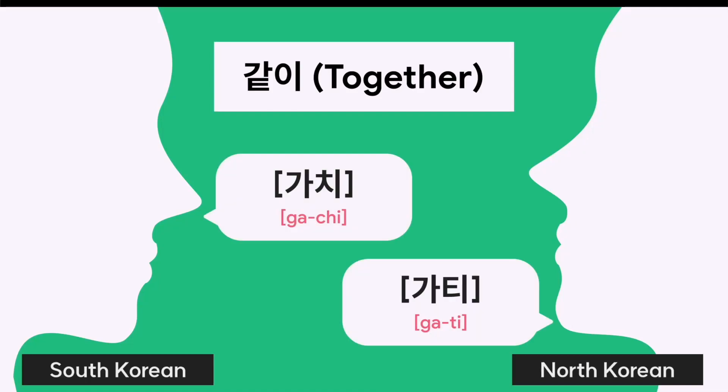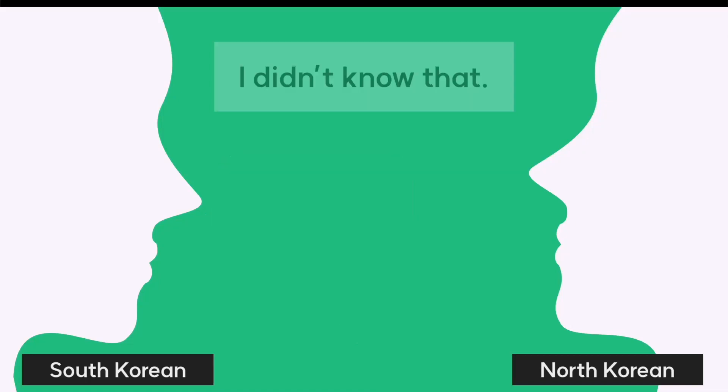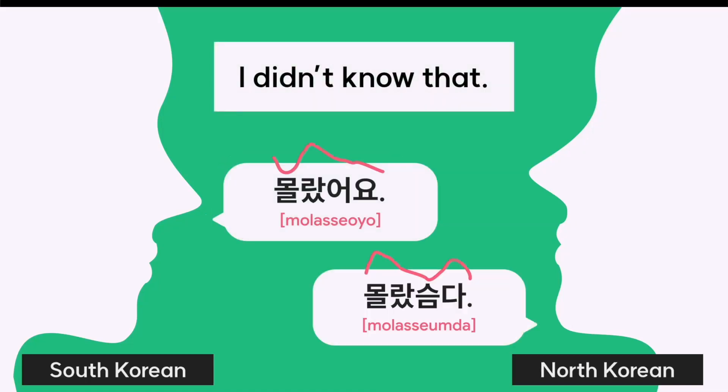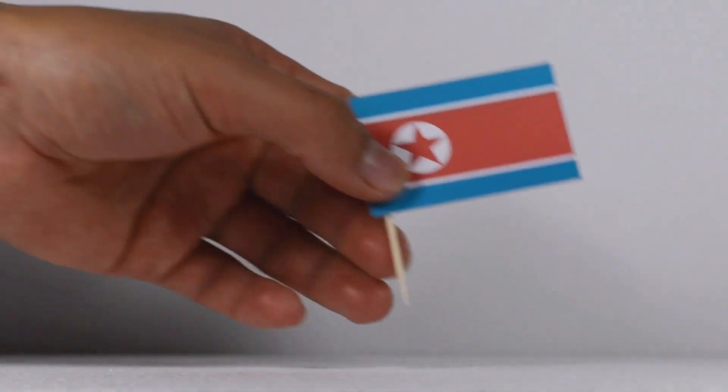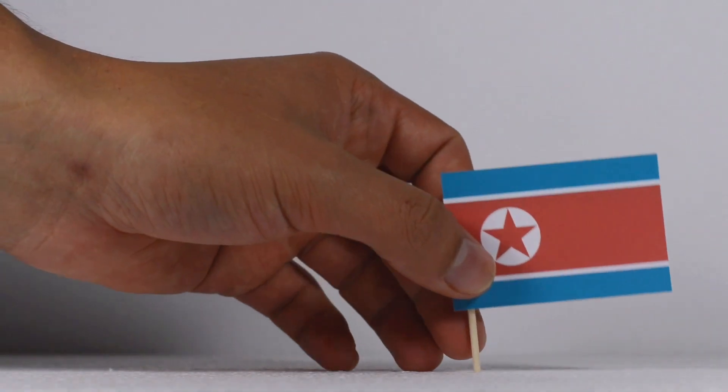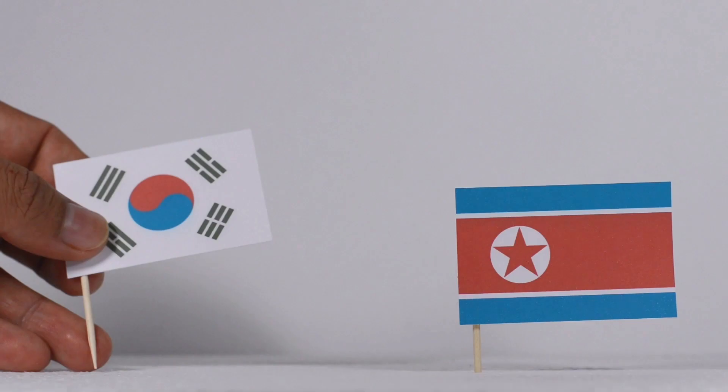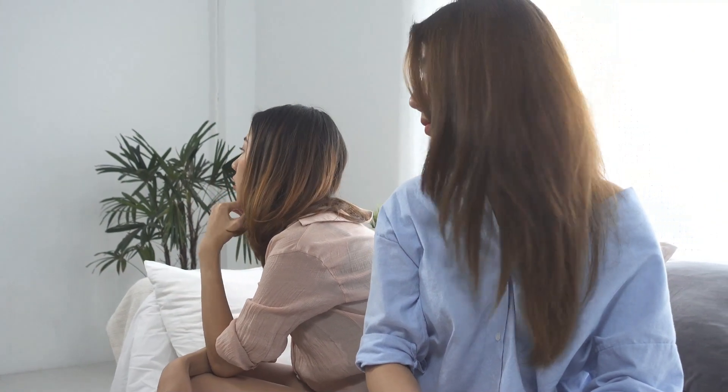While North Korean and South Korean spoken language systems and pronunciation differ significantly, official resettlement programs for North Korean defectors do not fully support learning the natural accent of the South. This makes it challenging for North Koreans to integrate into South Korean society, both in terms of job search and daily life.